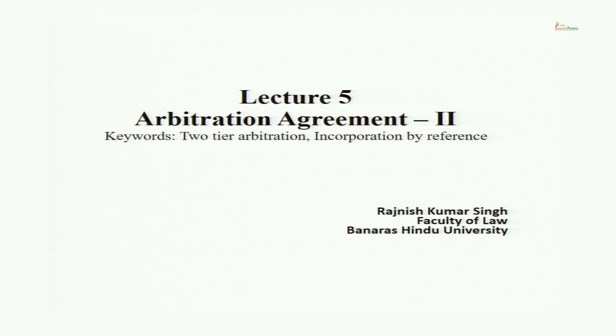Hello friends, welcome to the fifth lecture of the course ADR and Arbitration. This lecture is on the second part of our discussion on Arbitration Agreement. If you recall in the previous session, I introduced the idea of Arbitration Agreement. We referred to Section 7 to understand what are the essential attributes of a valid arbitration agreement. We also saw what tribunal we are referring to — it is a private tribunal created by the parties on the basis of consent to pass an enforceable order acting in a judicial manner. Arbitration agreement is the most important thing because unless you have that, you cannot start arbitration.